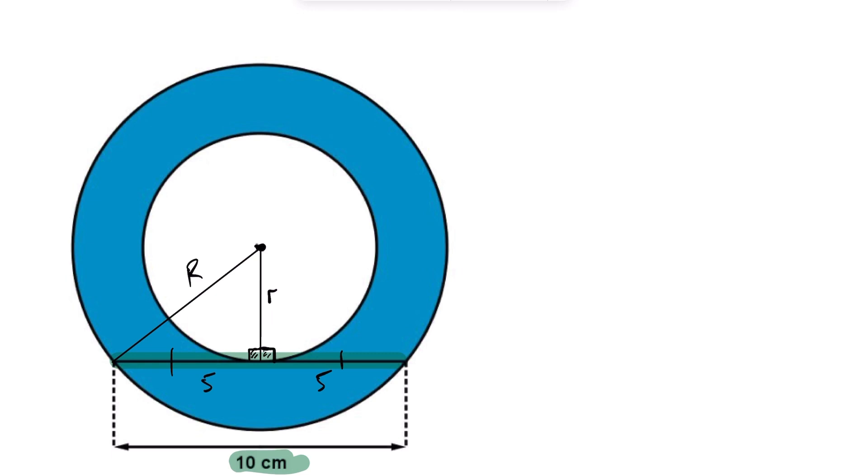So from here, we have the following relationship. Using Pythagorean theorem, I know that r squared plus 5 squared is going to equal capital R squared. So we've got r squared plus 25 is capital R squared here. So we have this to work with here.